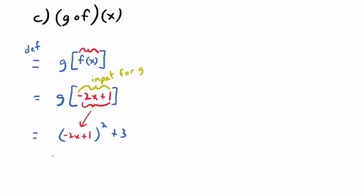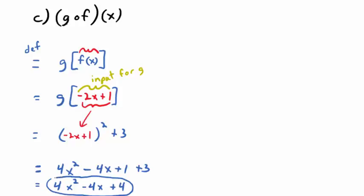What could you do with this? You could foil it out and add the constants together. Using the formula a plus b quantity squared equals a squared plus 2ab plus b squared: square the first guy — negative 2x squared gives 4x squared. Then multiply the first guy times the second guy and double it, and because of the minus it becomes minus 4x. Then 1 squared is 1, but you still have the plus 3. So when the dust settles: 4x squared minus 4x plus 4 plus 3, giving 4x squared minus 4x plus 6.